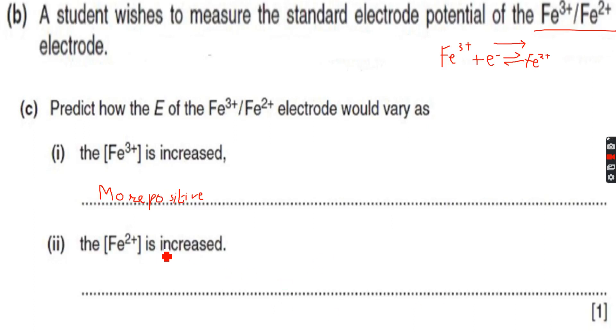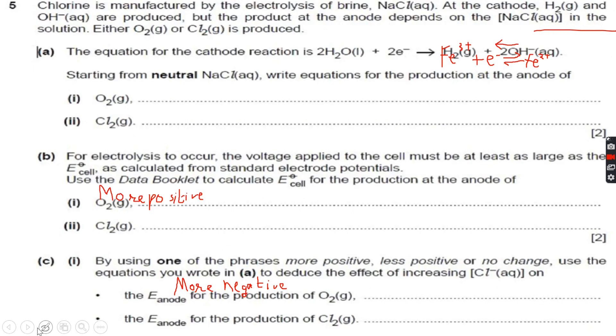When the concentration of Fe2+ is increased and we apply Le Chatelier's principle, the system will try to oppose the increase in the concentration of Fe2+, so the equilibrium will shift to the left. As the equilibrium is shifting to the left, the value of E will become more negative or less positive because equilibrium will shift to the left.